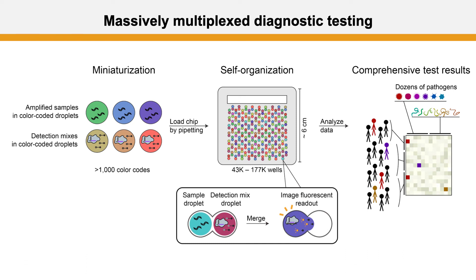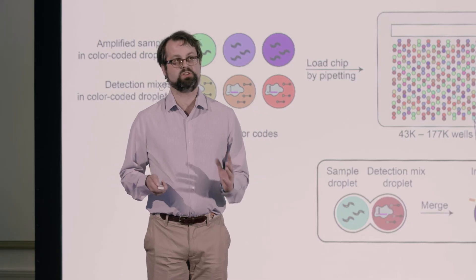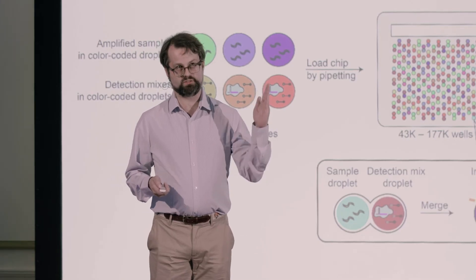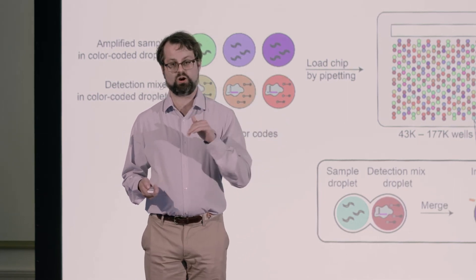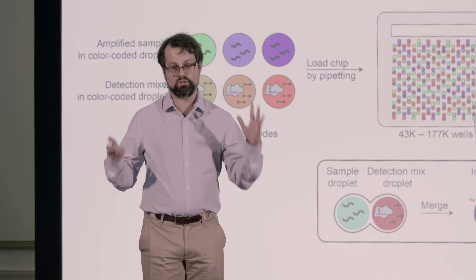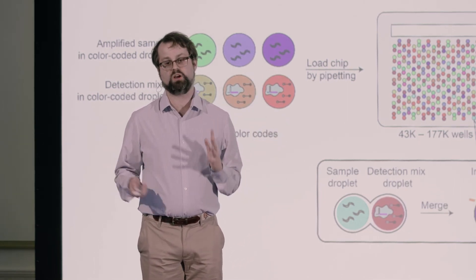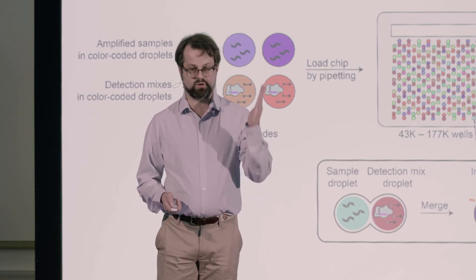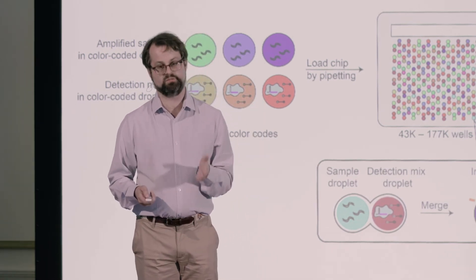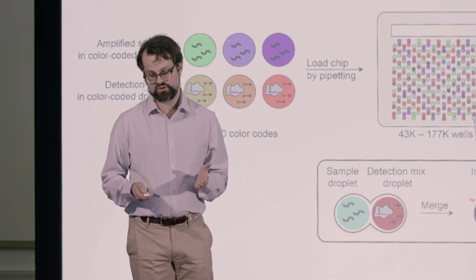We came up with some very clever ways — if you're interested, you can read our paper — where we figured out a way to comprehensively test sets of samples for sets of different CRISPR RNAs. We form all of the different pairwise combinations, and that lets us comprehensively test a set of samples for a set of different pathogens.